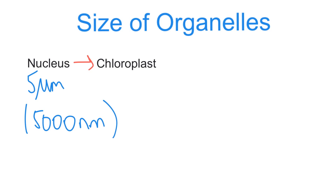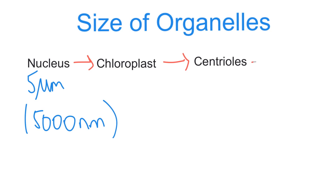The next organelle is chloroplast. Centrioles come after chloroplast, but remember that centrioles are found only in animal cells, not in plant cells. Mitochondria comes next.